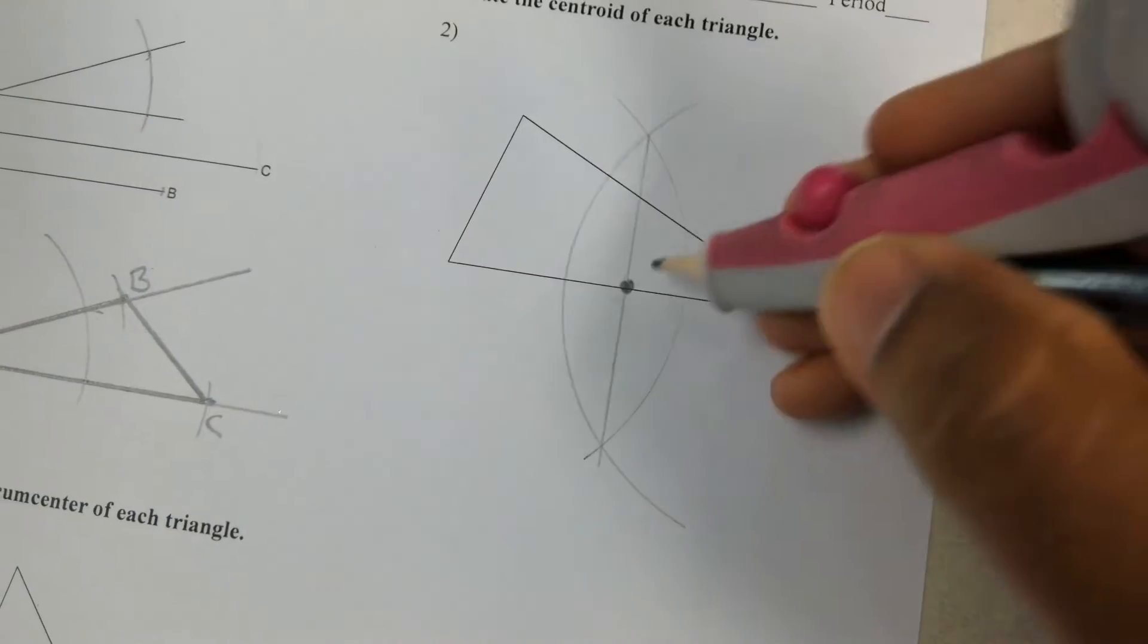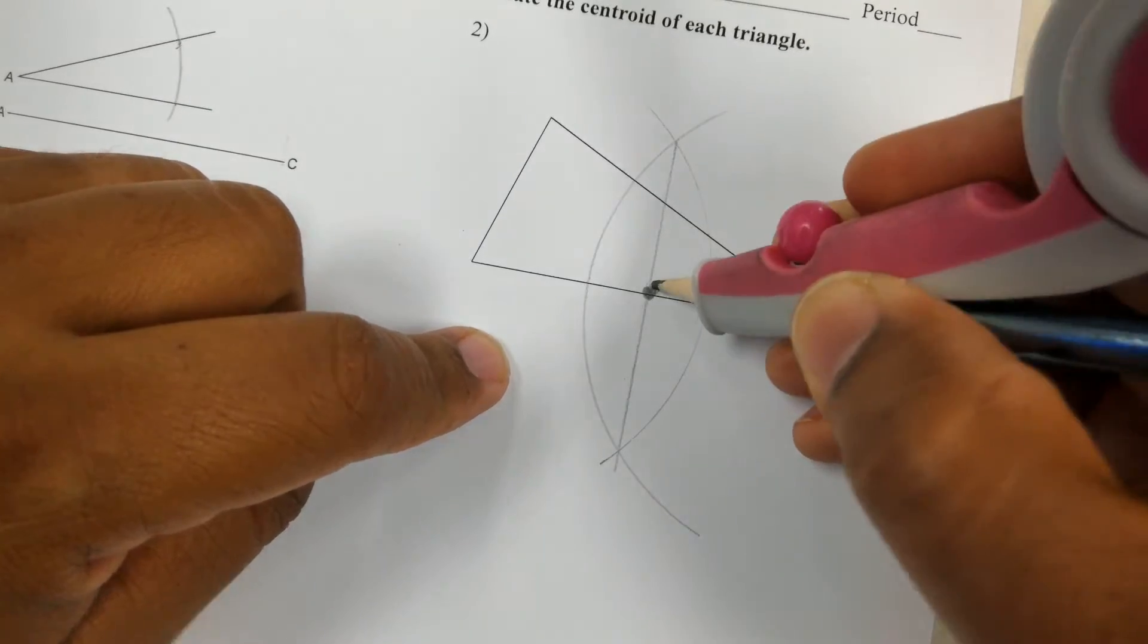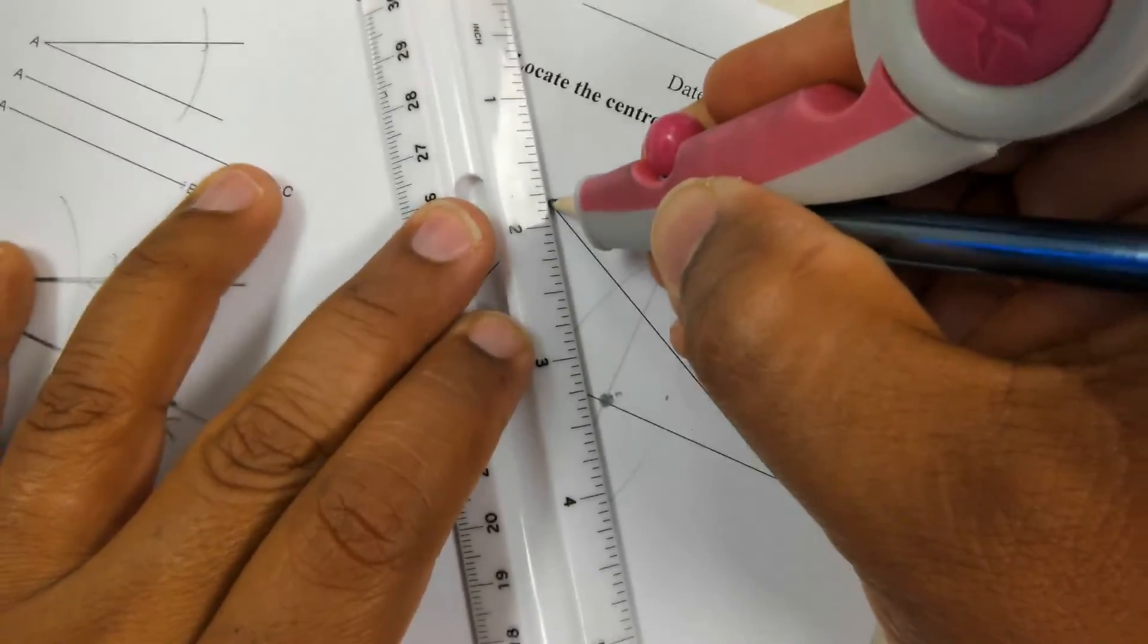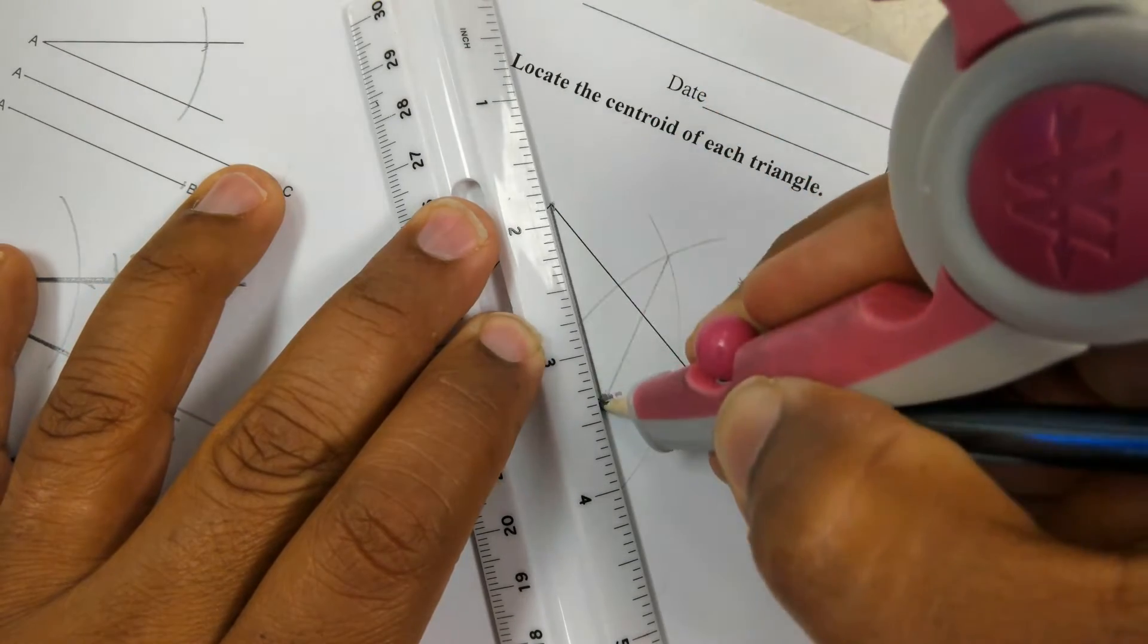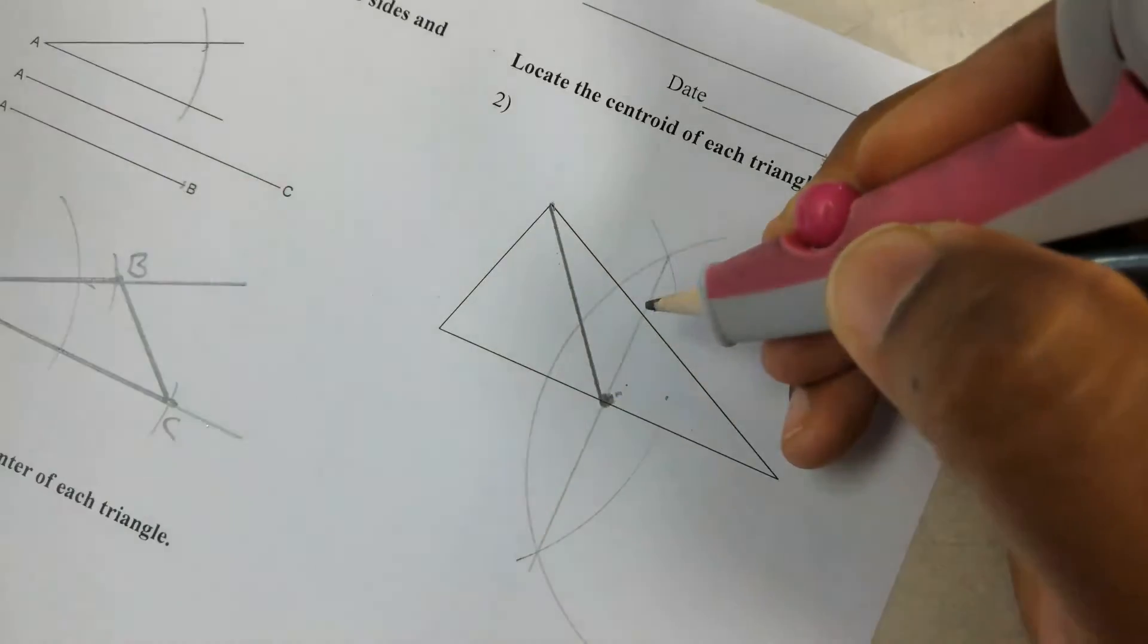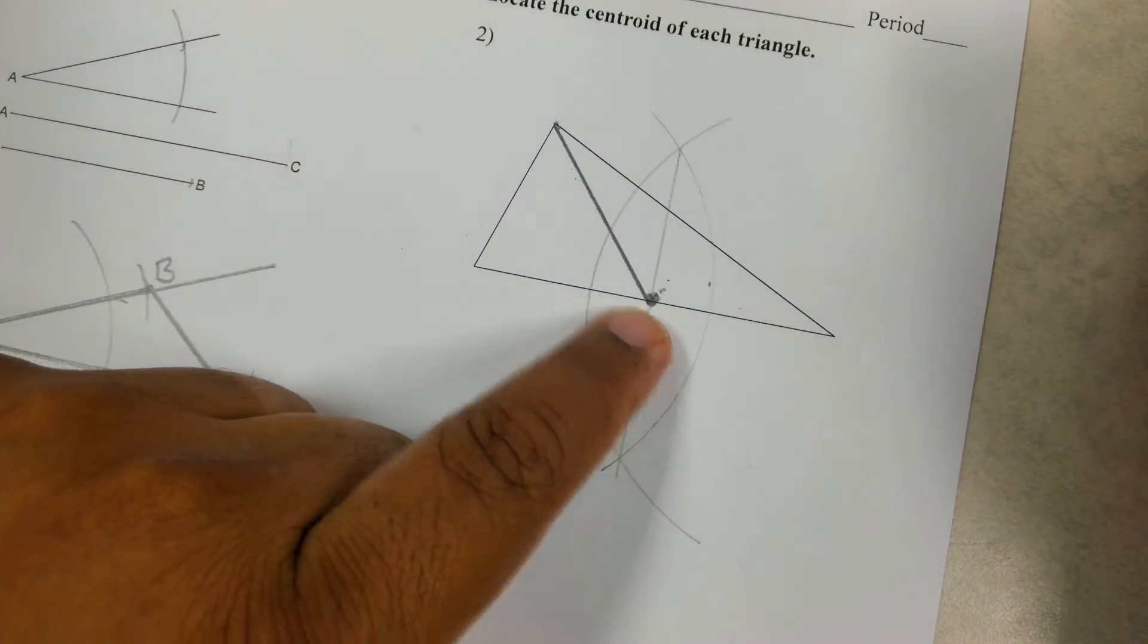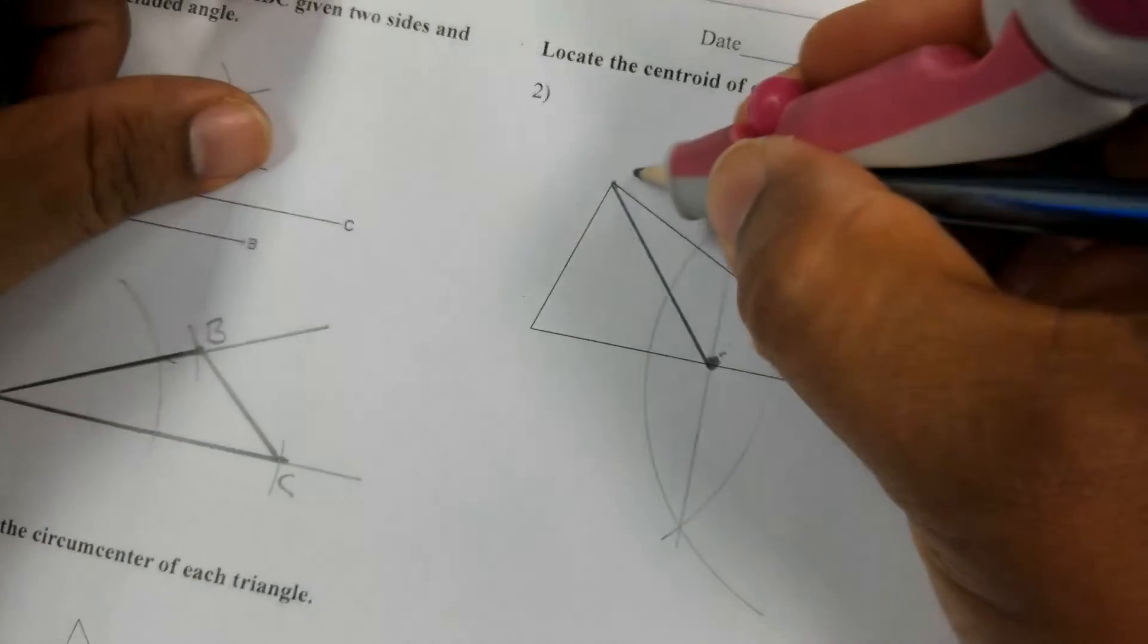Now that I have the midpoint, so on this segment the midpoint is the point in the middle, let me connect it to the opposite corner. And that's what we call a median. So I found the midpoint of a segment, connected to the opposite corner, and that's what we called a median.